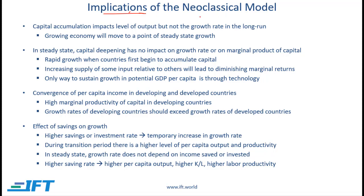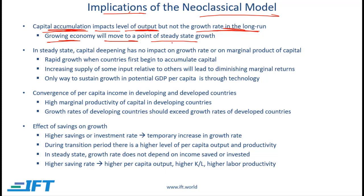Now let's move on to the implications of the neoclassical model. The first implication is that capital accumulation impacts the level of output but not the growth rate in the long run. In the long run, we have a certain fixed growth rate and capital accumulation will not impact it. A growing economy will move to a point of steady state growth — we might have high growth initially, but ultimately we will get to a steady state growth rate. Remember that formula: the steady state growth rate is theta over 1 minus alpha plus the growth rate of the labor force.